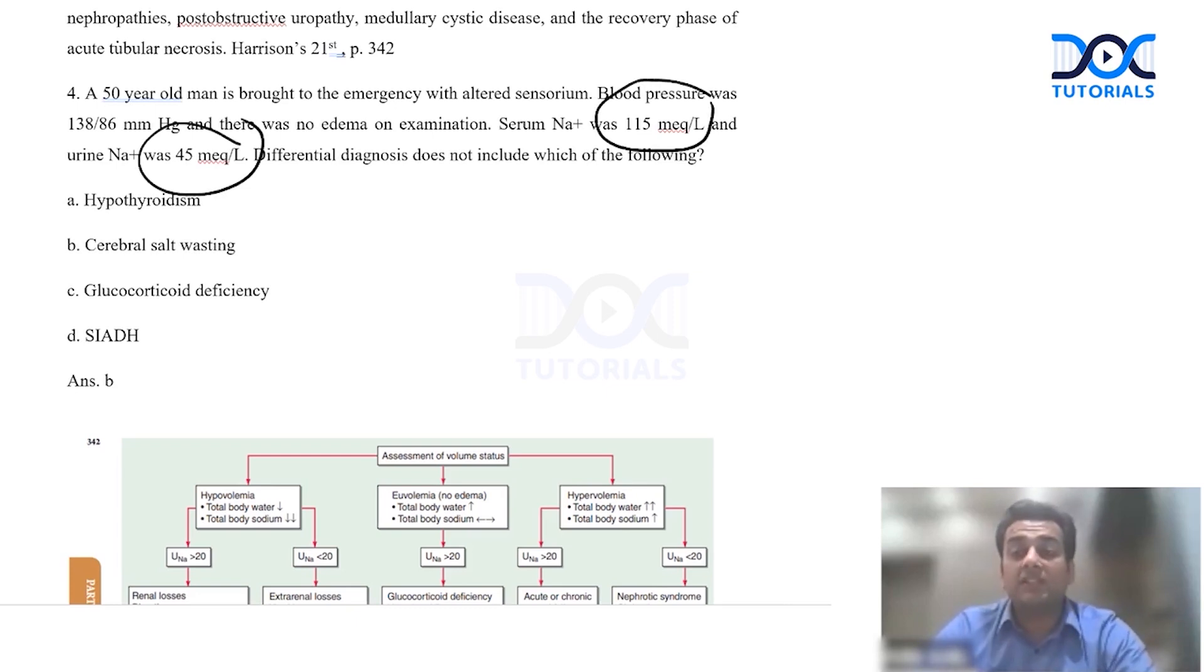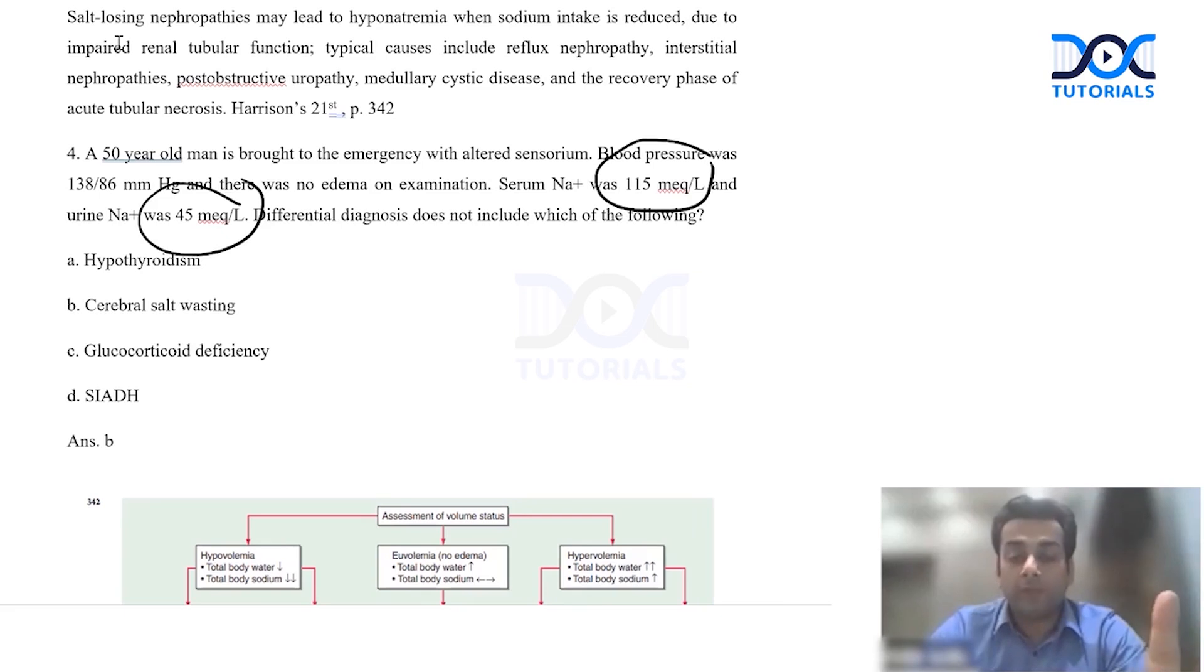The differential diagnosis does not include which of the following. So there was no edema, so it is basically a hypovolemic or a euvolemic hyponatremia. Of course it is less likely hypovolemic because the blood pressure is quite stable. The sodium is low and the urinary sodium is high.